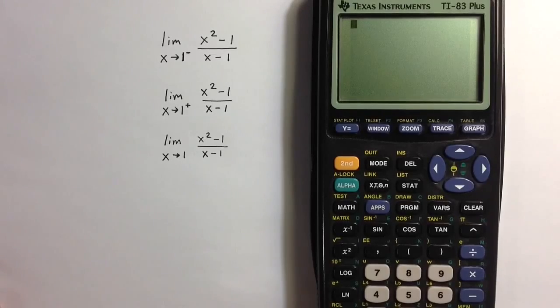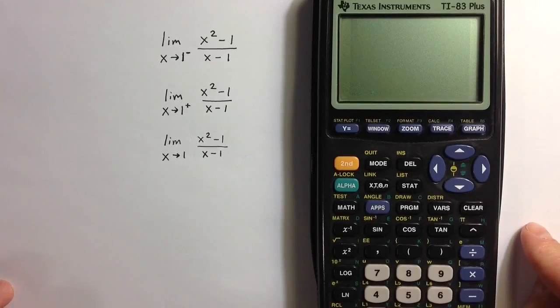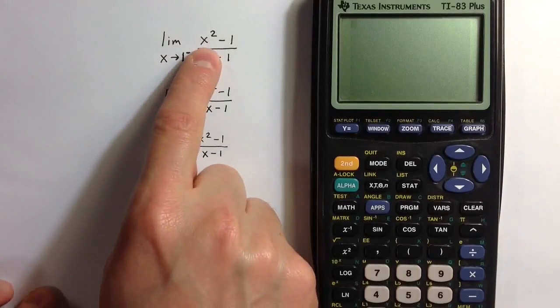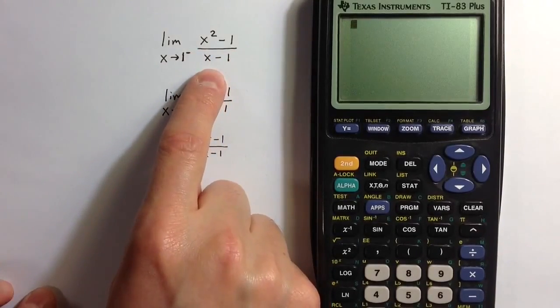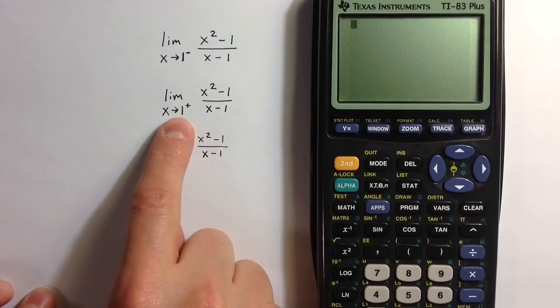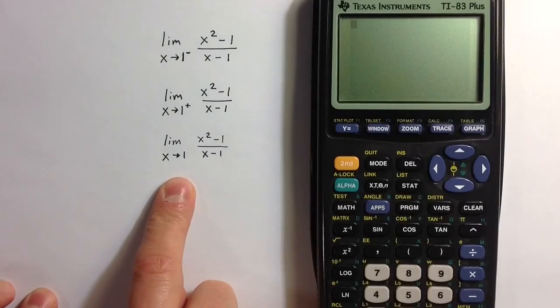Let's evaluate some limits with a TI-83 calculator. We'll evaluate them numerically. We have the limit from the left of x squared minus 1 over x minus 1 as x approaches 1 from the left. We have the same limit but from the right, and then we have the two-sided limit.